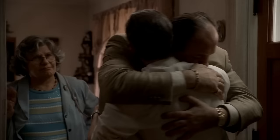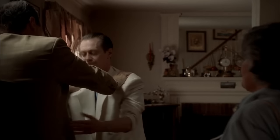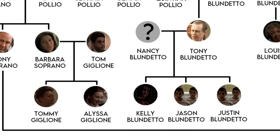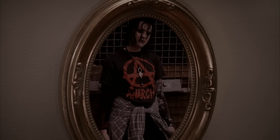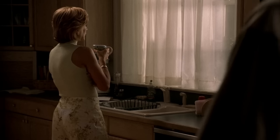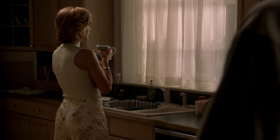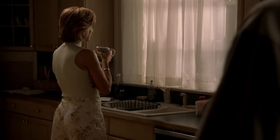Together, Quinn and Albert would have one son, Tony Blundetto, also known as Tony B. The two Tonys were like brothers growing up together. Tony B. would later marry Nancy and have three children. Kelly became a drug addict and ran away while Tony B. was in prison. The twins, Jason and Justin, were fathered by smuggling Tony B.'s sperm out of prison to impregnate Nancy.